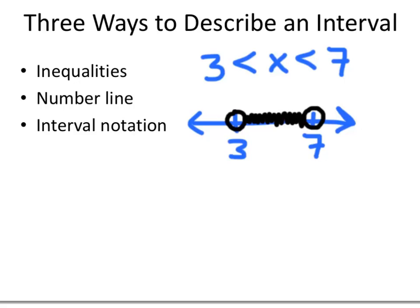Finally, we can use interval notation. We write our two numbers 3 and 7 with a comma in between them. To indicate that we don't want to include 3 and we don't want to include 7, we put round parentheses around those two numbers. The round parentheses mean that we don't want 3 or 7 in our interval.